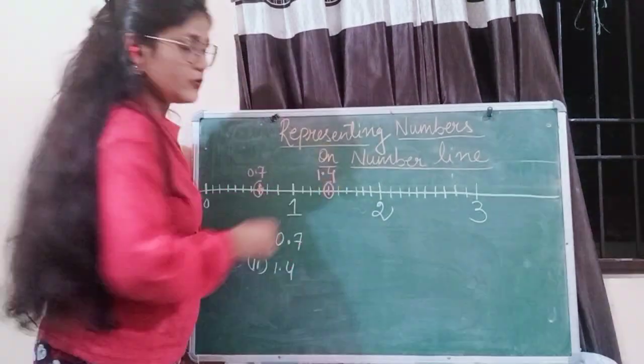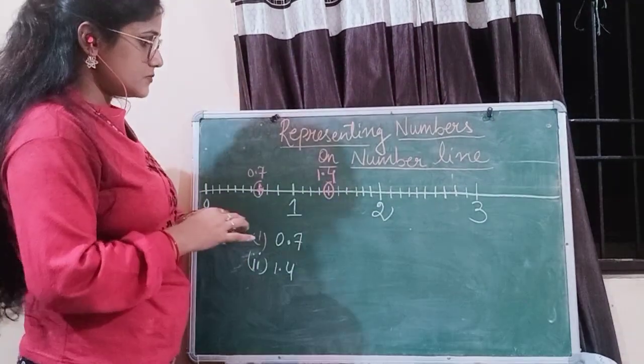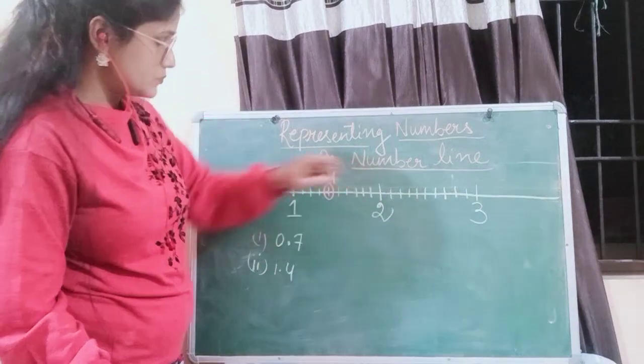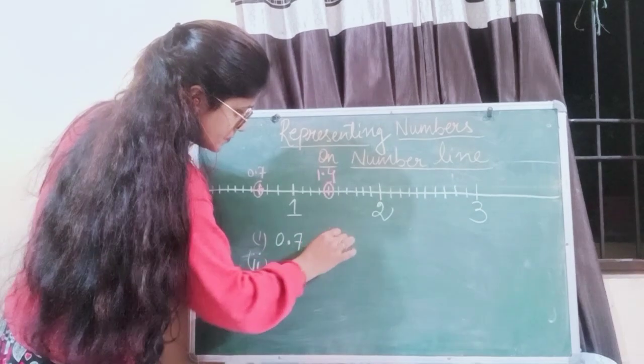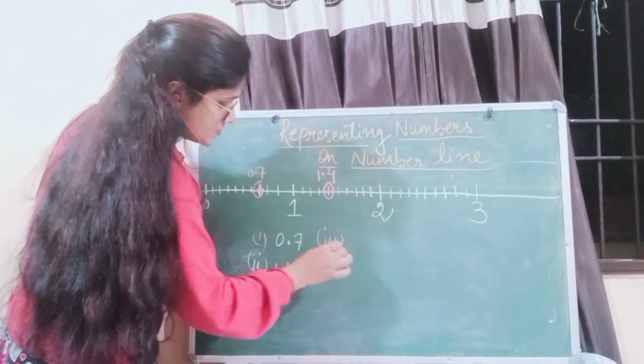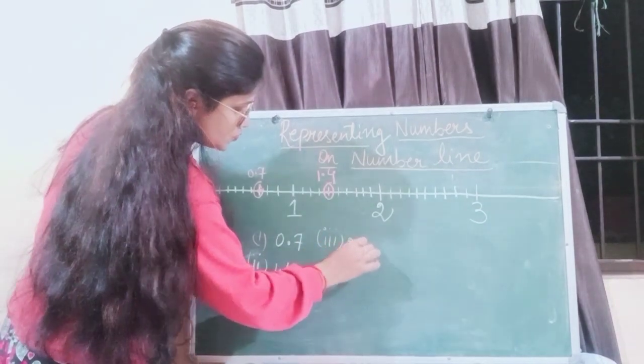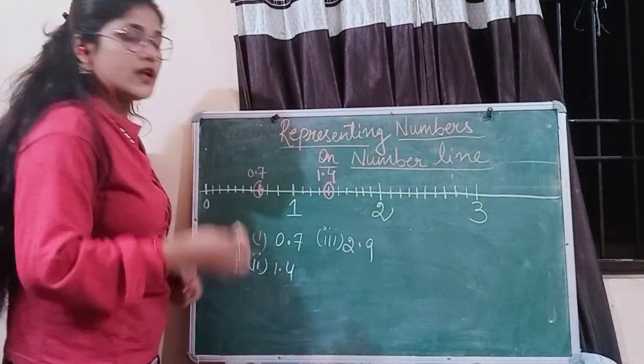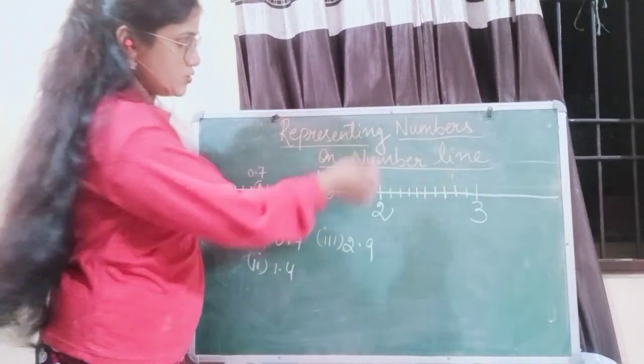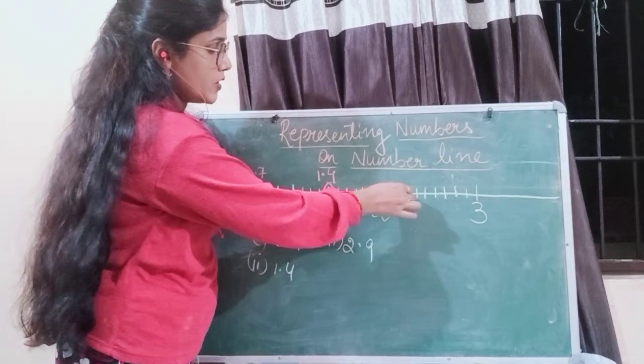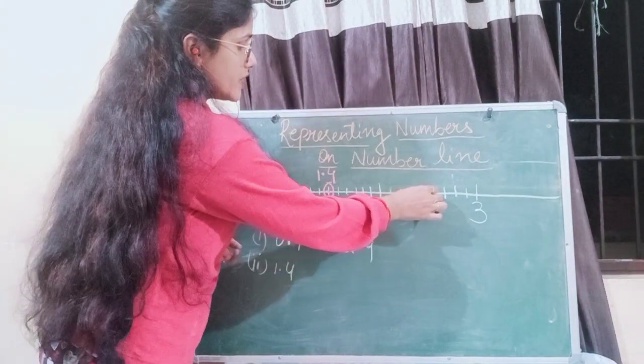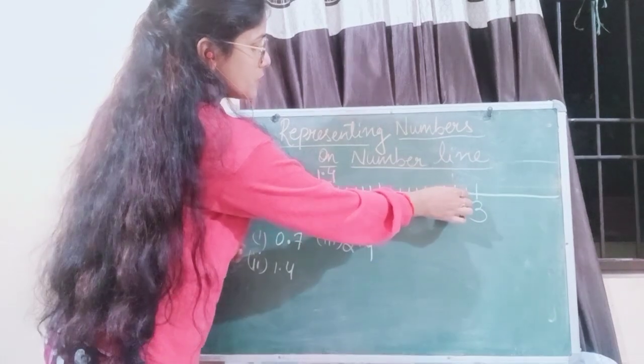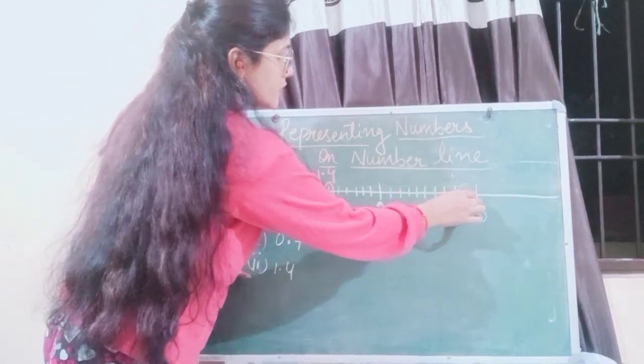Next comes 2, so suppose we take another example, that is 2.9. Where are you going to plot 2.9? You will count again 2.1, 2.2, 2.3, 2.4, 2.5, 2.6, 2.7, 2.8, 2.9, so this is the point.